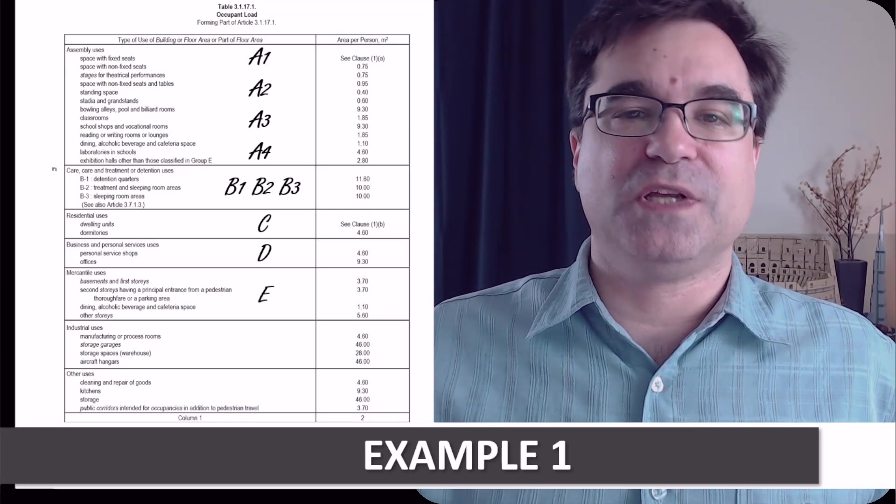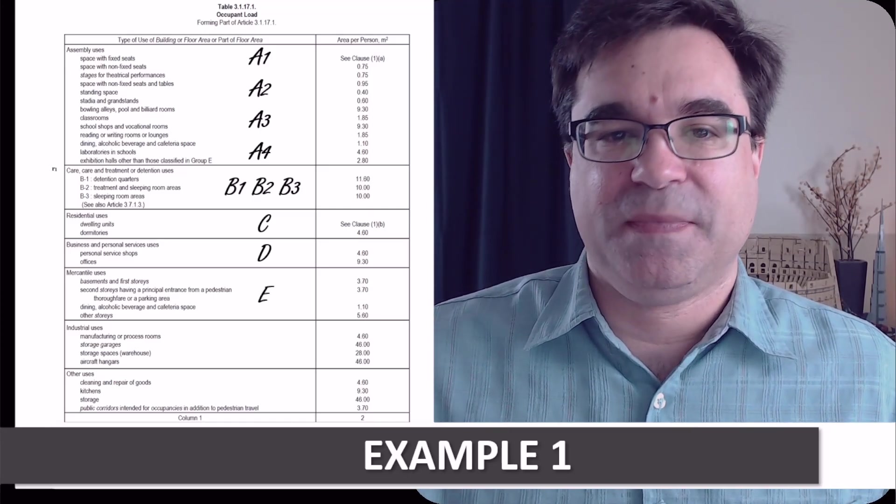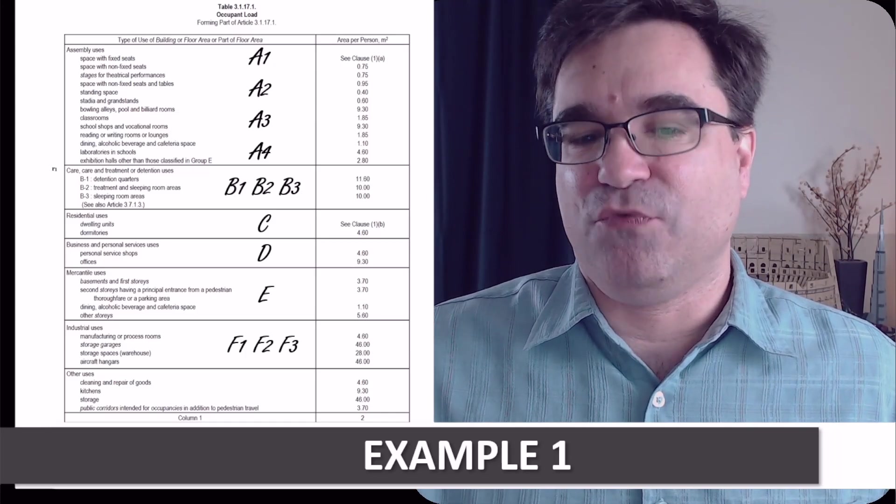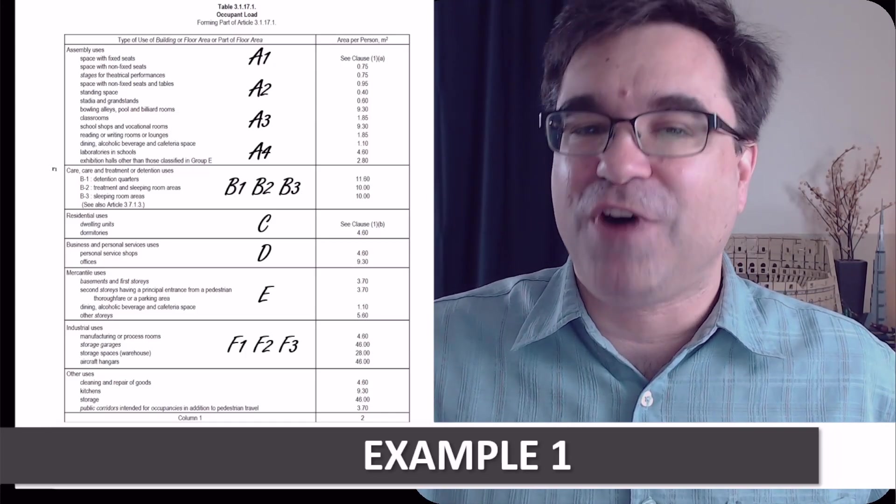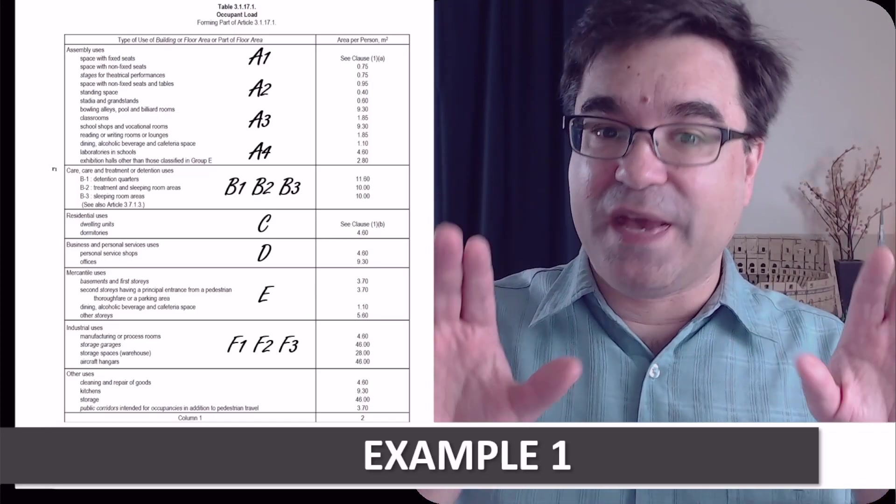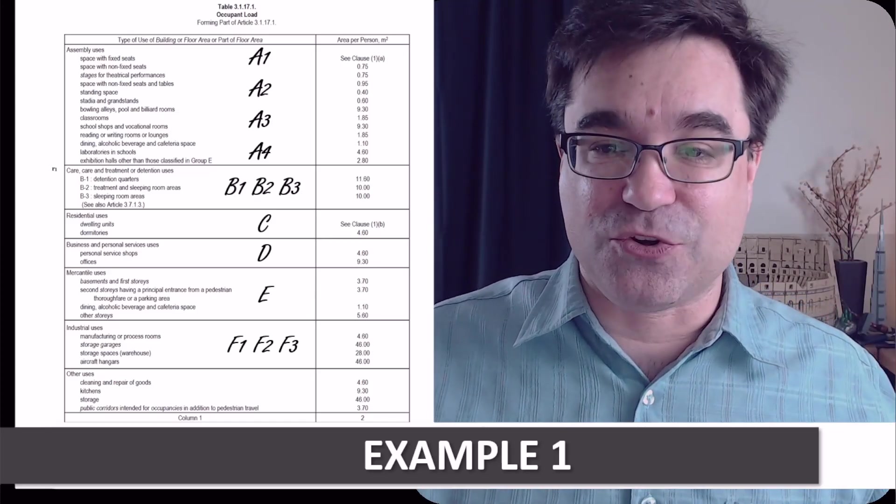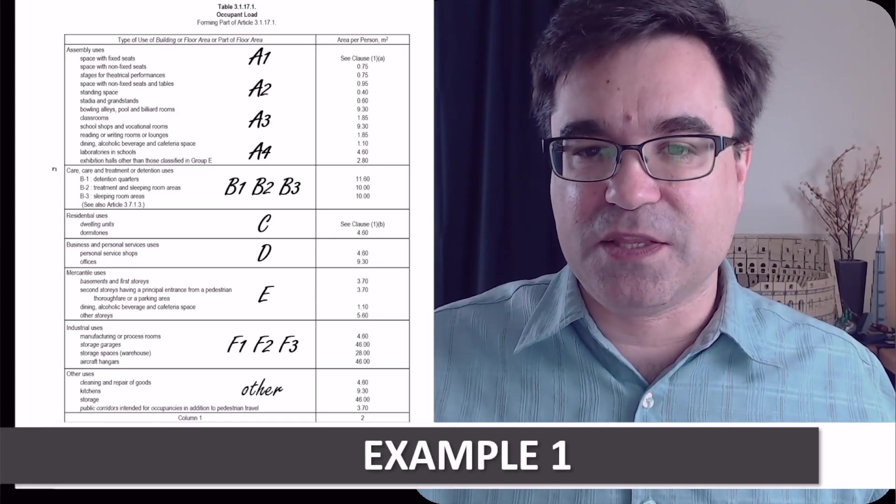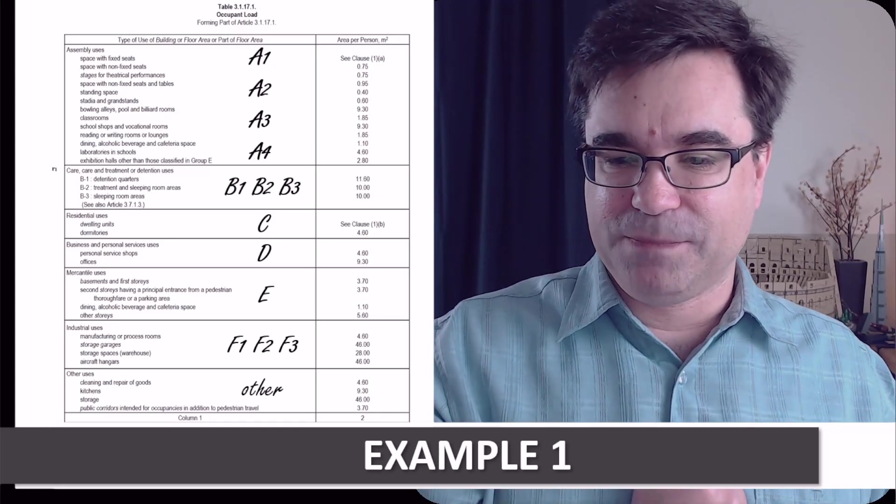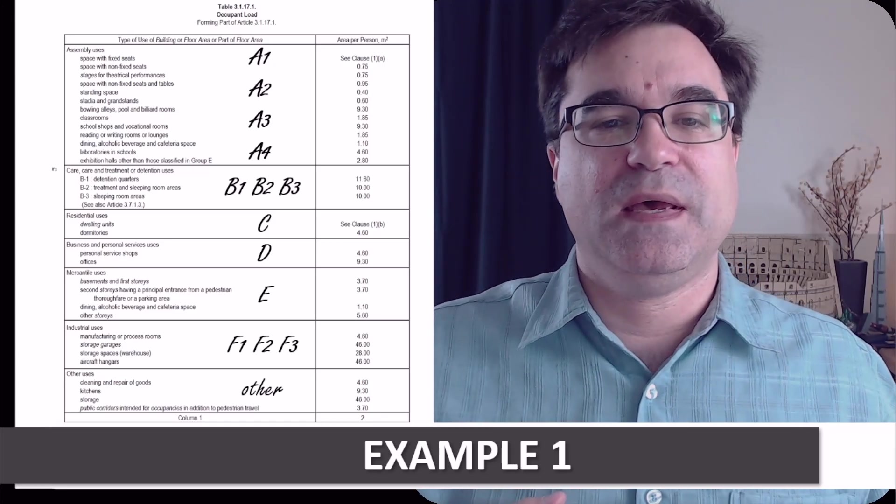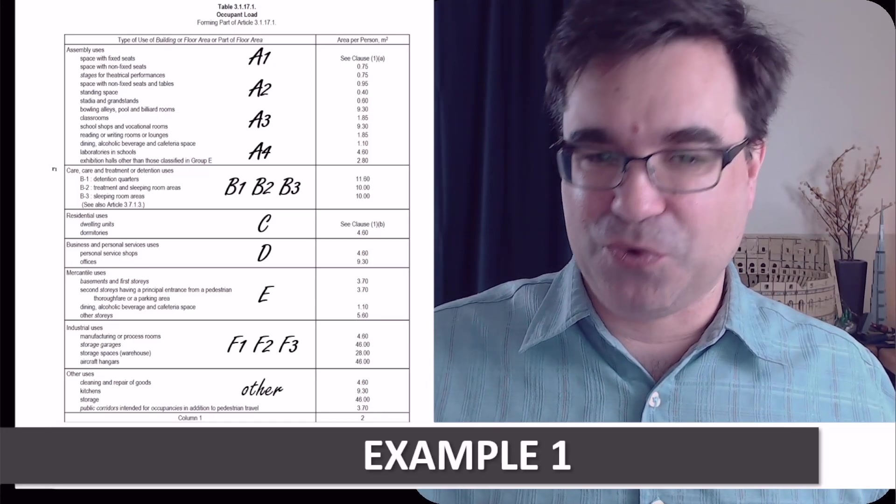Then, for mercantile, I write E. And for industrial, I write F1, F2, and F3. And finally, always, don't forget, this is so important, Other, I actually write Other right here, right? All you see, see it at the bottom? So, I don't forget about that.